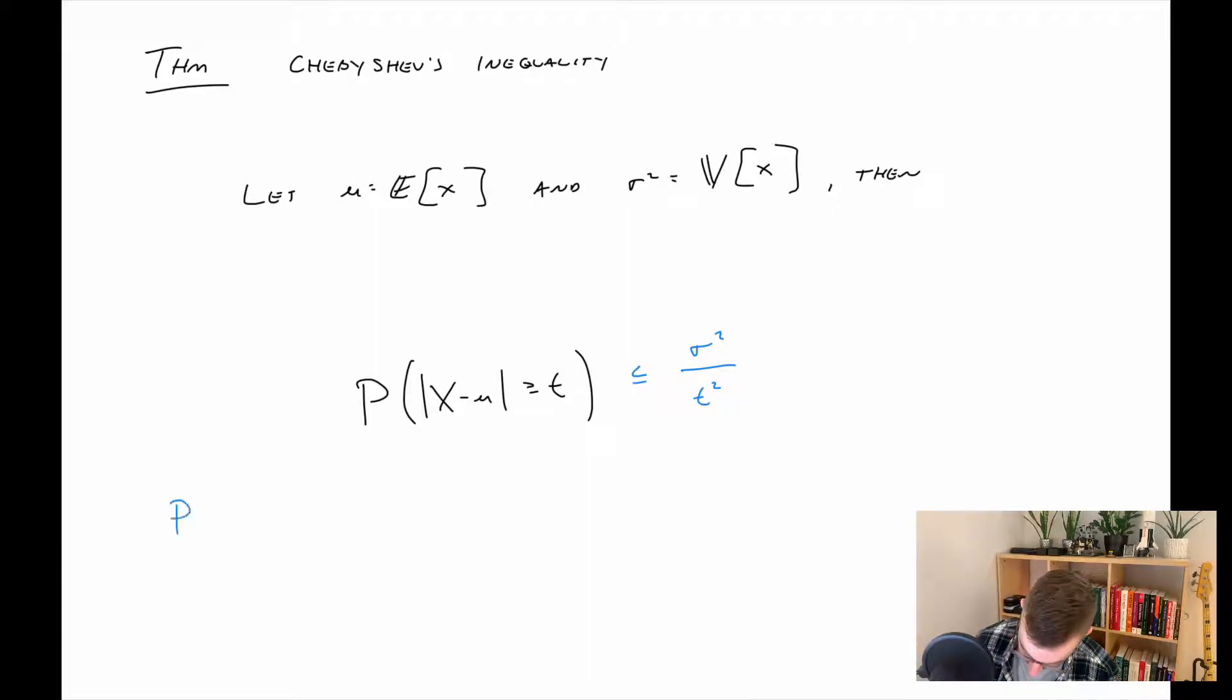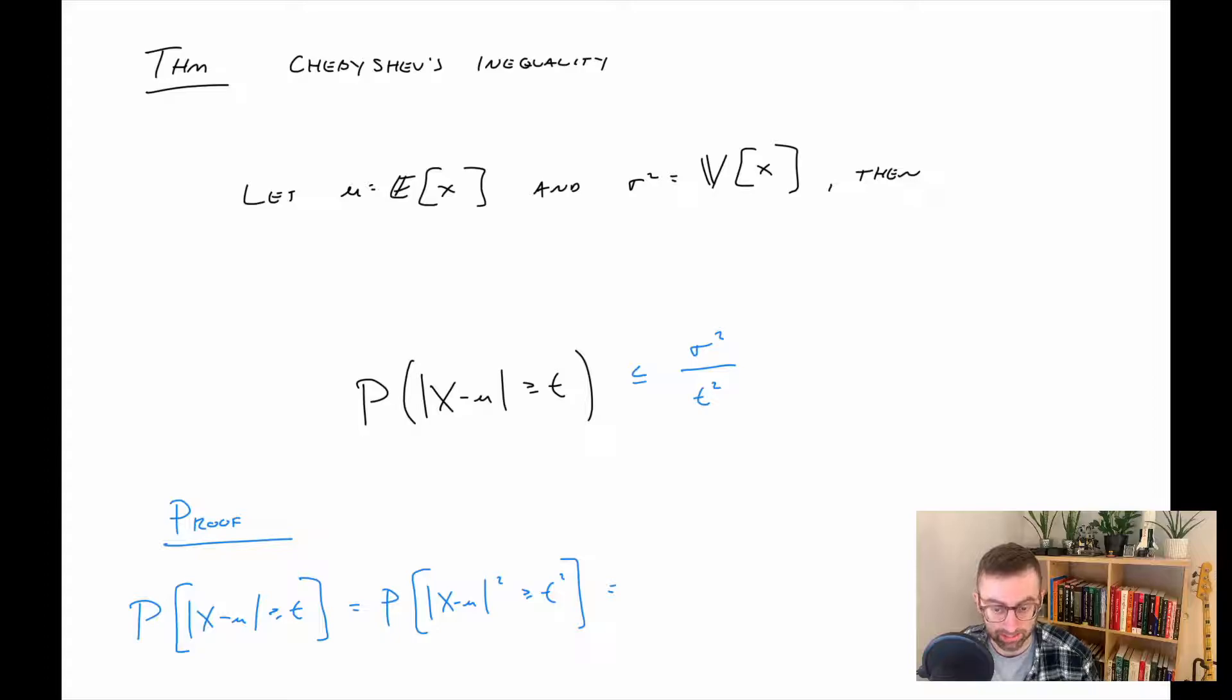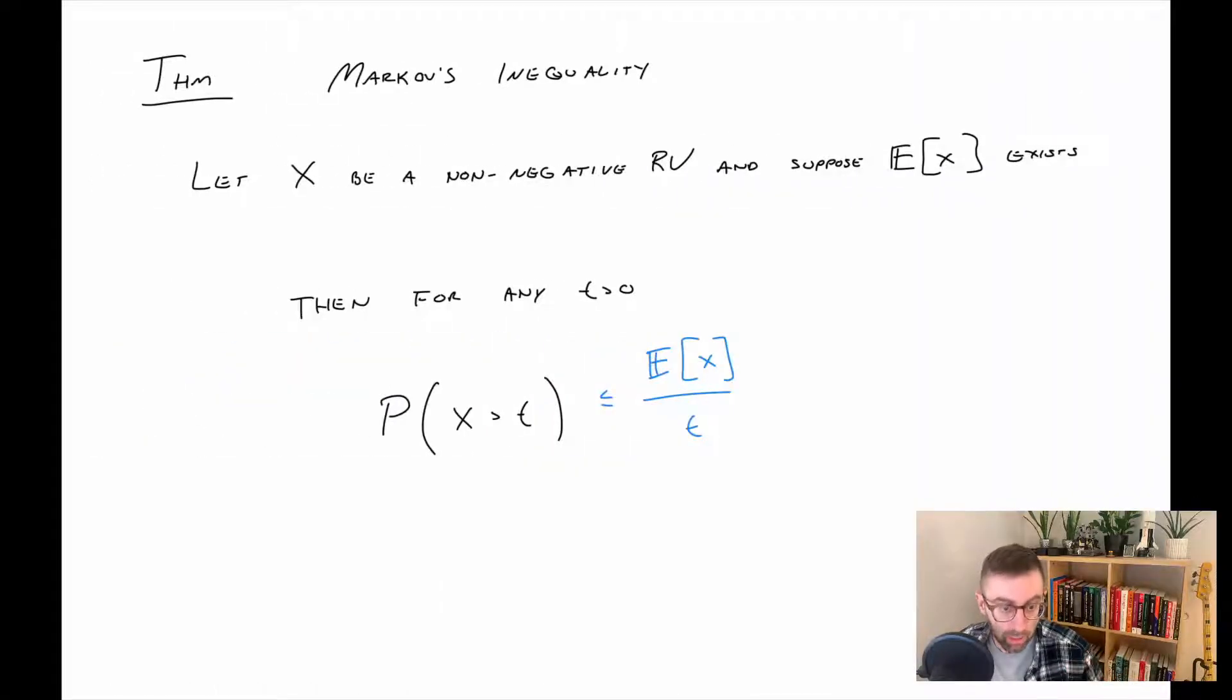We'll do a quick proof of this. So we want to bound this quantity. What I'm going to do is inside this probability statement, I'm going to square both sides. So this is now squared greater than or equal to t squared. Now the value of x minus mu squared, well that is a non-negative random variable, and t squared is some non-negative value. So now we apply Markov's.